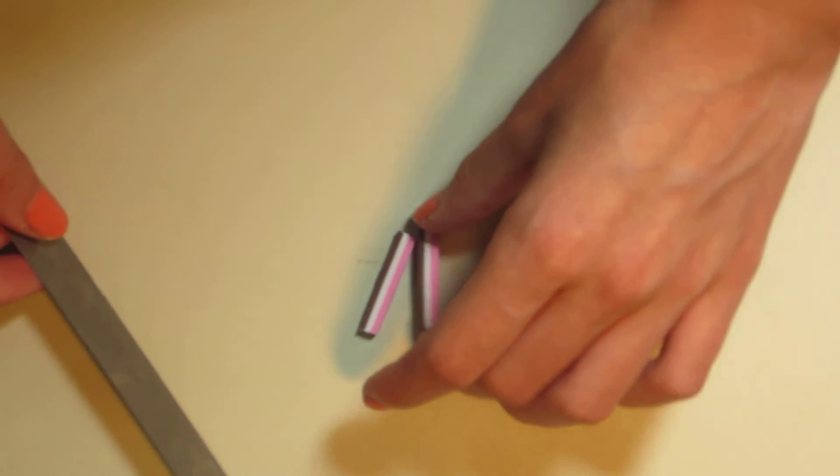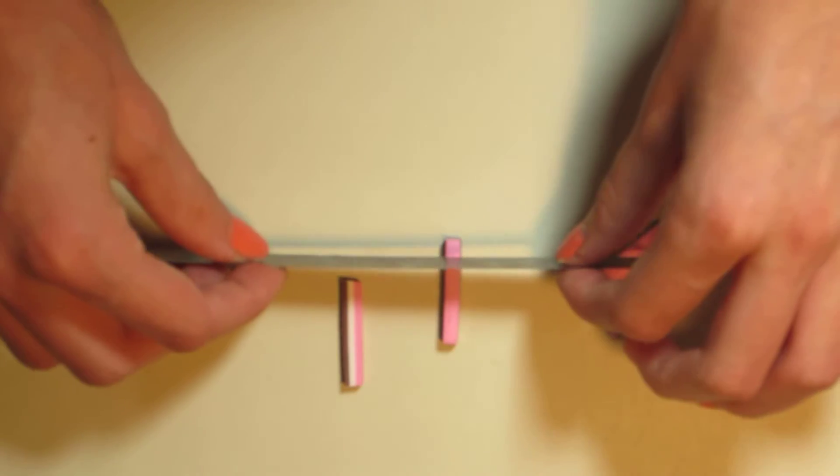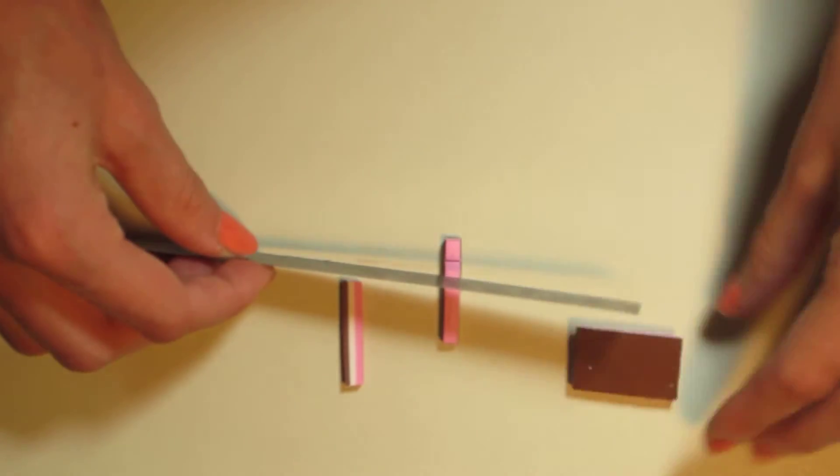And you want to make them pretty tiny. It kind of depends on what size your bottle is. But then you just want to cut them into little squares.